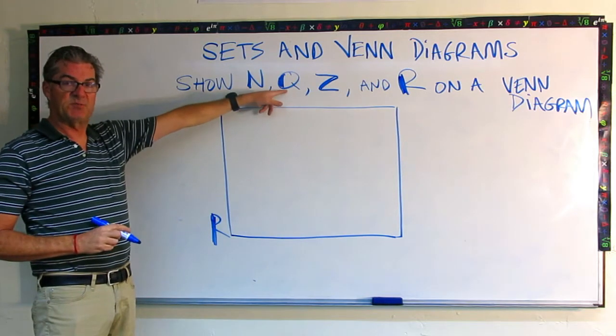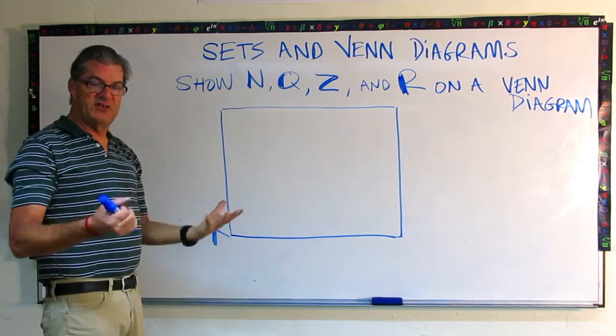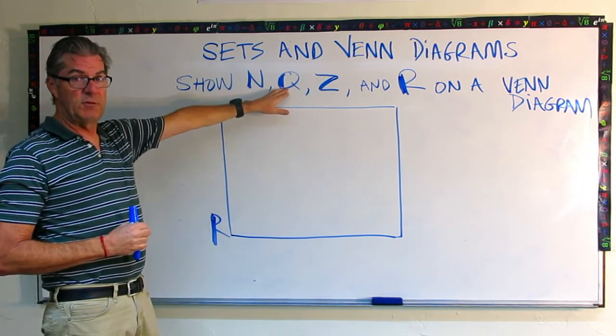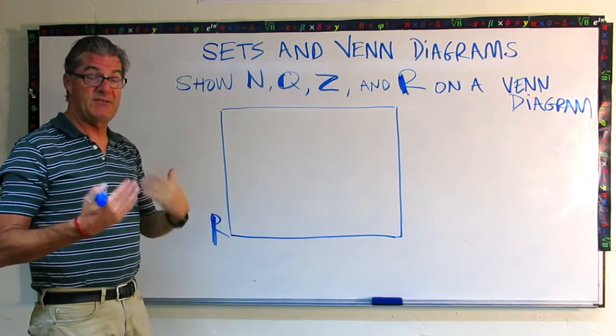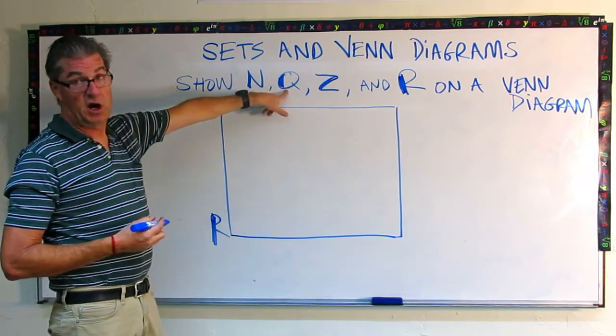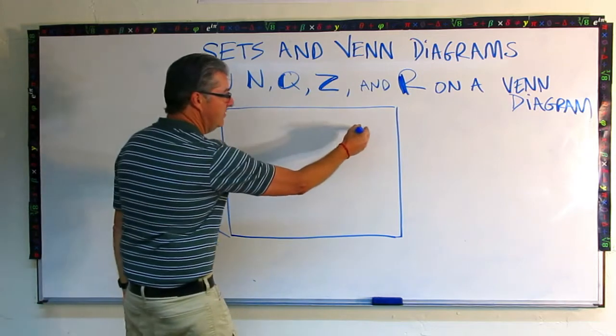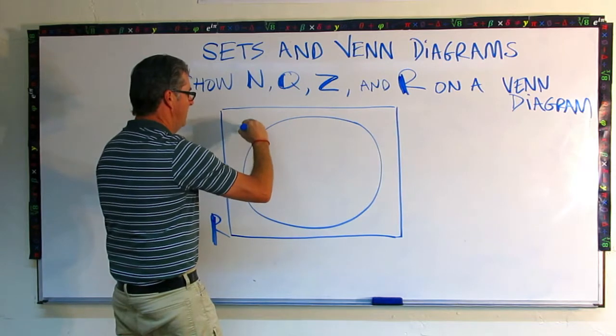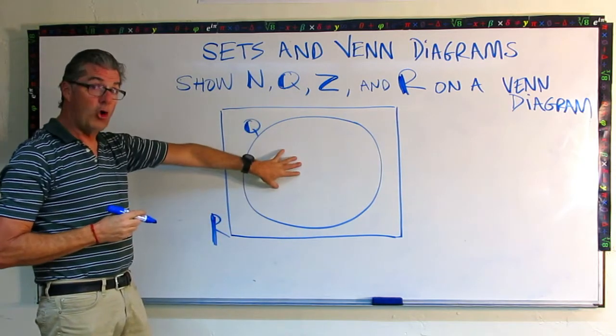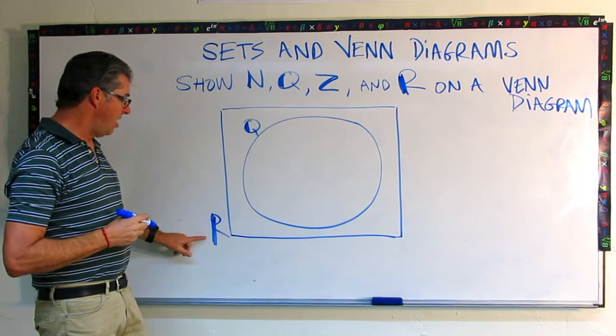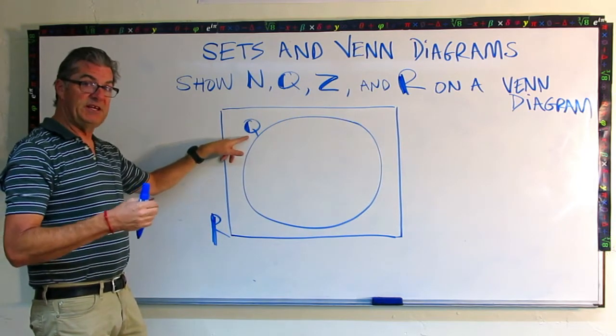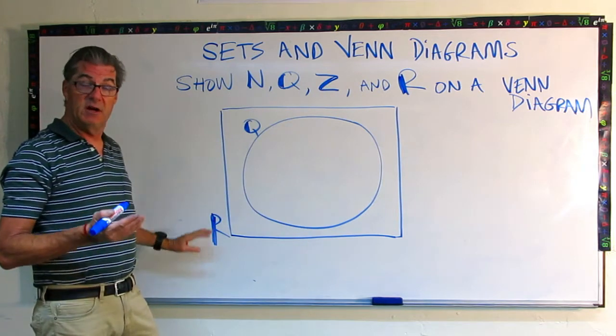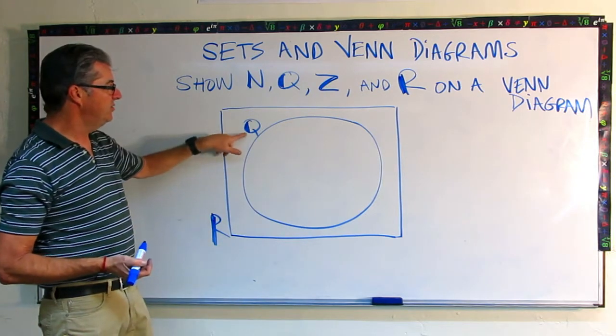Now the next one is Q. These are numbers that can be expressed as a fraction. So fractions or decimals go in here. These are not decimals that never repeat like irrational numbers like pi and things like that. But they are, these are the rational numbers. So what we can do, make a big circle here and put Q there. So Q is wholly contained inside R, or the rational numbers are completely contained within the real numbers. Remember, real numbers are numbers that can be shown on the number line.